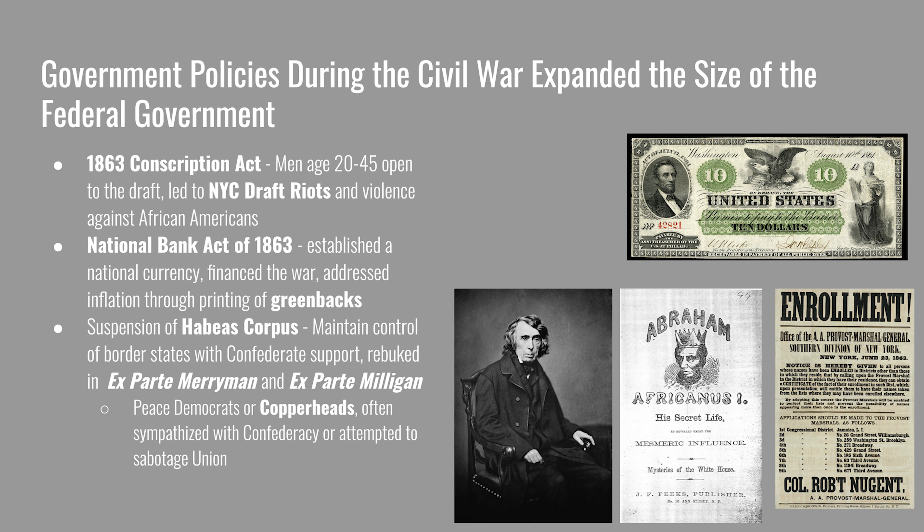Democrats remaining in the Union were usually called Peace Democrats or Copperheads. They often sympathized with the Confederacy and only marginally supported the Union, though they definitely disliked the war and Lincoln. A Copperhead pamphlet racializes Abraham Lincoln for liberating Black Americans in the Confederacy, calling him 'Abraham Africanus I' and posing him as a king overstepping his presidential powers.